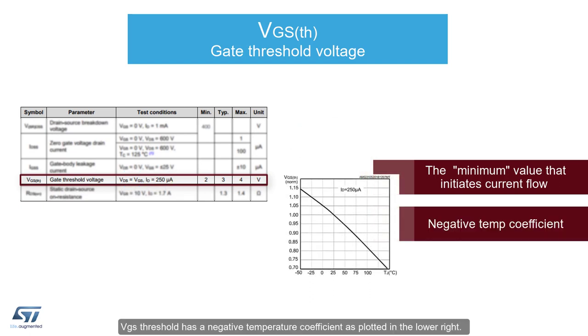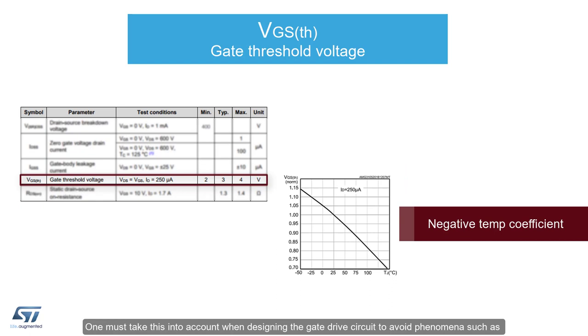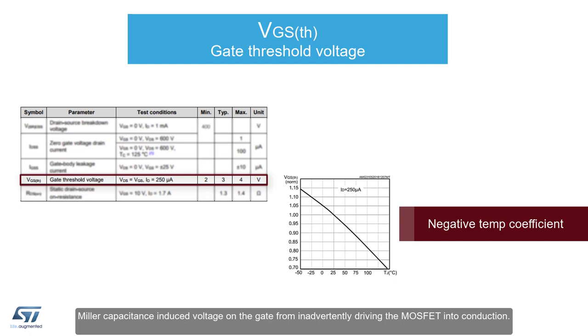VGS-TH threshold has a negative temperature coefficient, as plotted in the lower right. One must take this into account when designing the gate drive circuit, to avoid phenomena such as Miller capacitance induced gate turn-on.